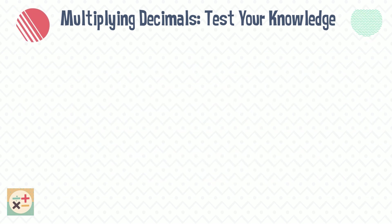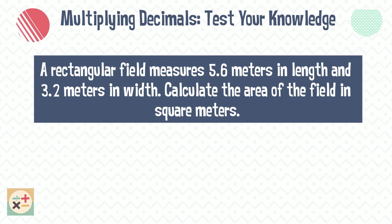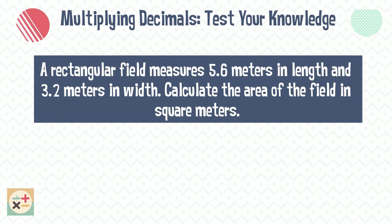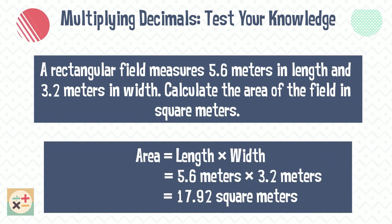Finally, question nine: a rectangular field measures 5.6 meters in length and 3.2 meters in width — calculate the area of the field in square meters. To find the area, we multiply the length by the width. So the area of the field is 17.92 square meters.